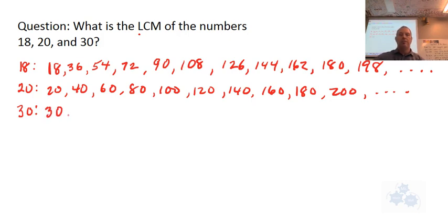What about 30? 30, 60, 90, 120, 150. Whoa. 180. Hey, we hit the jackpot.